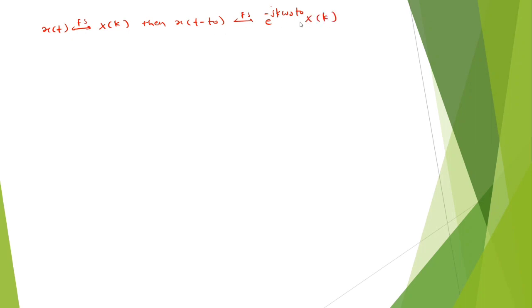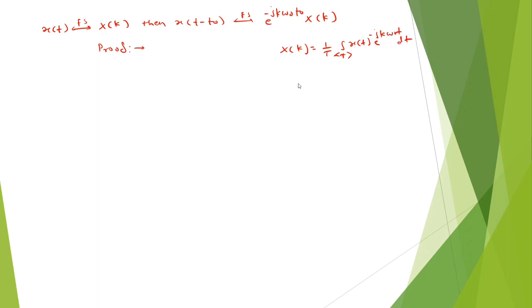We are going to prove this. The standard equation for calculating the coefficient is x of k equals 1 by T, integration over the period T of x of t, e raised to minus jk omega 0 t, into dt. We are using the same equation.